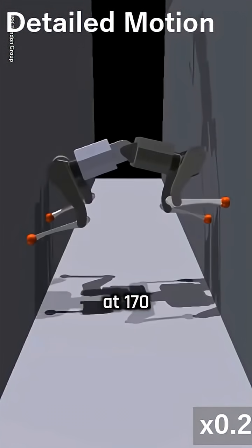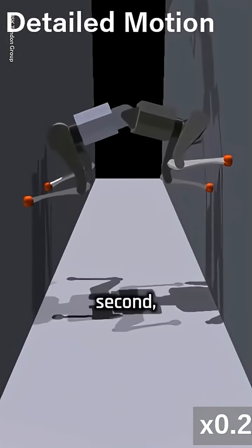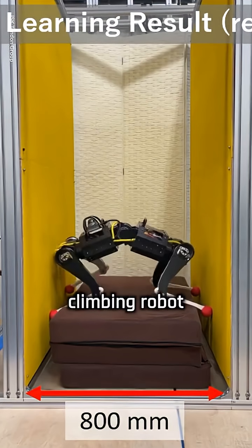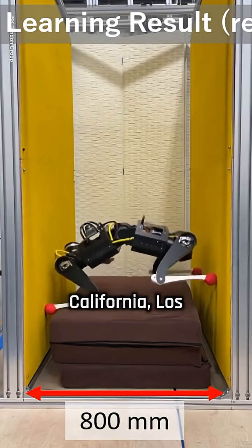In the narrowest gap, it climbed at 170 millimeters per second — 50 times faster than a previous climbing robot from the University of California, Los Angeles.